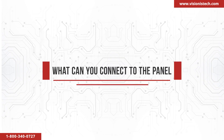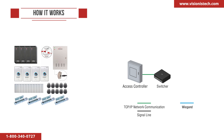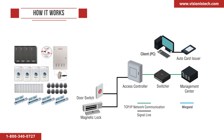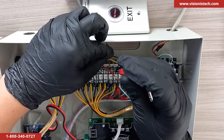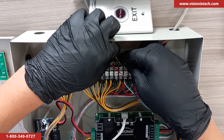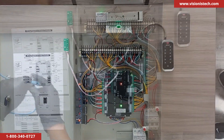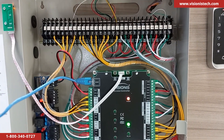Our access control panels are able to connect to any Wiegand 26 or 34 bits keycard readers, to any 12VDC locking device, an exit device such as exit buttons, wireless receivers, PIR motion detectors, etc., by hardwiring these devices to the panel on its corresponding terminal blocks. This illustration shows a typical installation. All you must do is hardwire all your entry and exit devices to the Visionis Access Control Panel. After you have done that, you will need to connect the panel to your LAN via Ethernet, activate the panel, configure network parameters via our Titan VS Access Software, and you are all set.